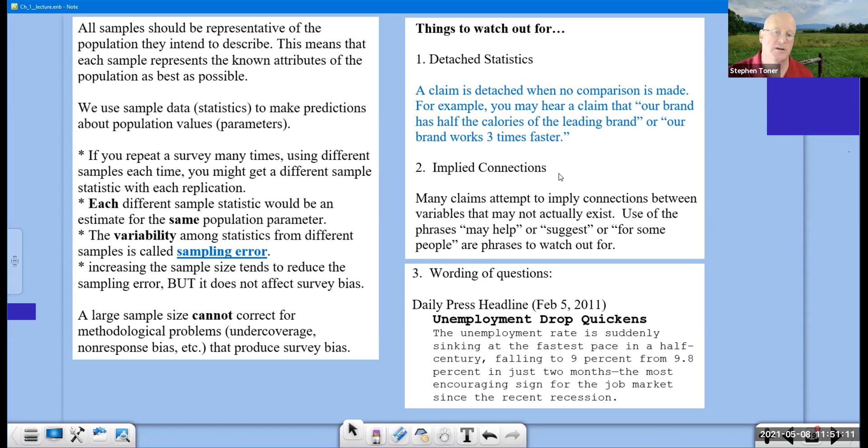Implied connections are another thing to watch out for. Many claims attempt to imply connections between variables that don't exist. Use phrases like may help, or suggest, or for some people. If something works for some people, that doesn't mean it's going to work for you. You can survey a hundred people, find two people that agree with you, and hey, it worked for those people. It's a meaningless way of applying a connection.